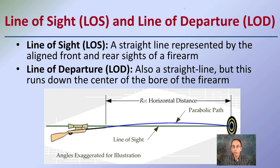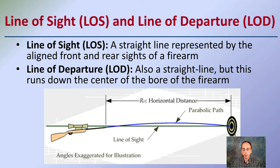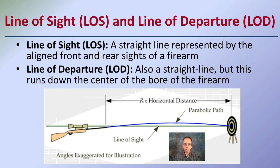We have something called line of sight and line of departure. Looking at this example of a target and a bullet being fired: the line of sight is a straight line represented by the alignment of the front and rear sights of the firearm. The line of departure is also a straight line but runs down the center of the bore of the firearm. The bullet actually travels a parabolic path — even though it was fired here and ends up here, and this is the line of sight, it did have a parabolic path. So it's important to take into consideration the distance between where the bullet leaves the barrel and impacts the target.